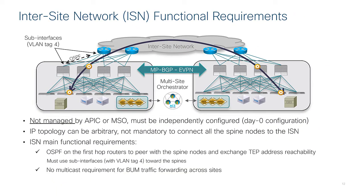Second point: in cases where we extend a bridge domain across the site and enable flooding — which, as discussed in module one, should be the exception more than the rule for a multi-site deployment — if we need to send this flooding traffic across, we call this function BUM forwarding. BUM forwarding does not require layer-3 multicast to be deployed in the inter-site network, unlike the ACI multipod architecture. This is because spines in a multi-site environment perform ingress replication, creating unicast copies for all the remote sites where that bridge domain has been extended. This simplifies the inter-site network requirements to just layer-3 unicast functionalities.